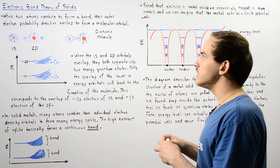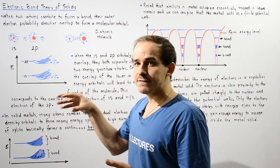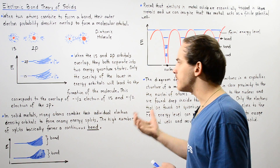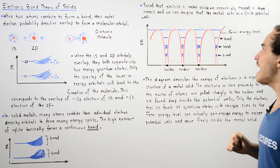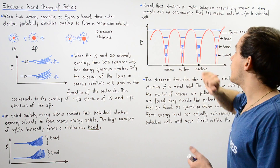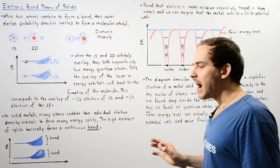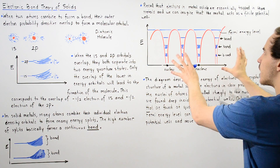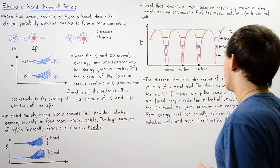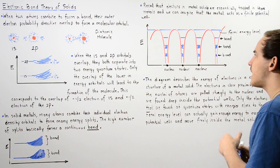Now let's combine the electronic band theory of solids with the fact that whenever an electron is found within a metal solid, it's as if it's found inside a finite potential well. Recall that electrons in metal solids are essentially trapped, and we can imagine the metal as acting like a rigid box — a finite potential well. The following diagram describes this scenario and combines it with the electronic band theory of solids.